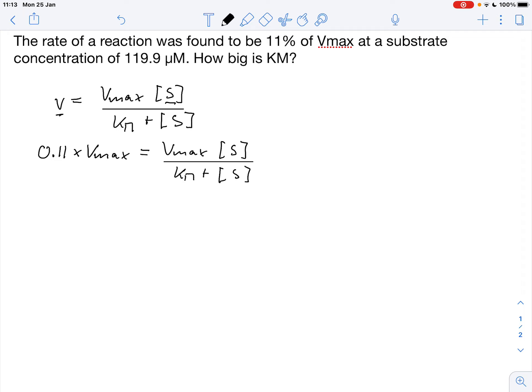And the Vmax cancels out. So that's quite nice. So what we need to do is bring everything under the fraction line, so this part here, we bring this to this side by multiplying both sides with this expression, Km plus substrate concentration.